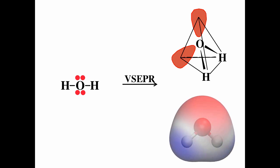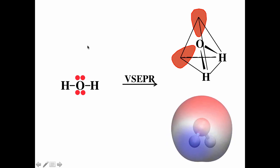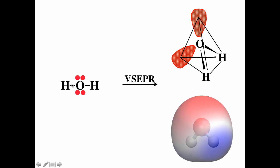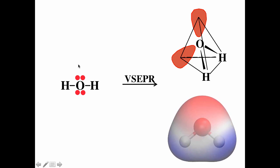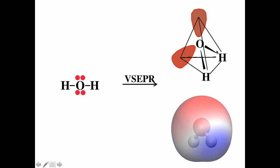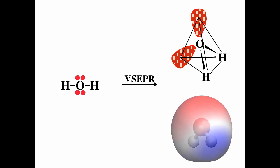For VSEPR theory, we were able to go from the Lewis diagram to the electron geometry, molecular shape, and bond angles. We looked at the center atom — in this case oxygen — and counted one, two, three, four regions. A region of electron density can be a single bond, double bond, triple bond, or lone pair. Four regions correspond to tetrahedral electron geometry with bond angles of about 109.5°. For molecular shape, we ignore lone pairs and get a bent or angular shape.